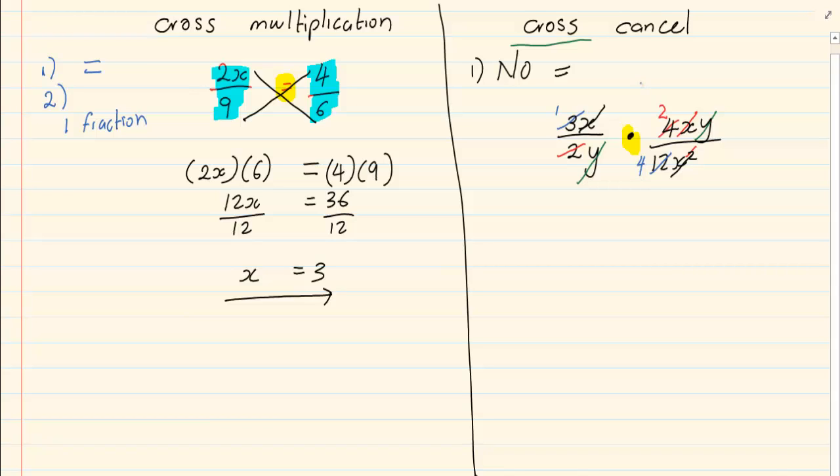How do we get our answer? Top times top, 1 times 2, over bottom times bottom. Now there is nothing here, so it's referred to as a 1. So our final answer is 2 over 4, which equals a half.